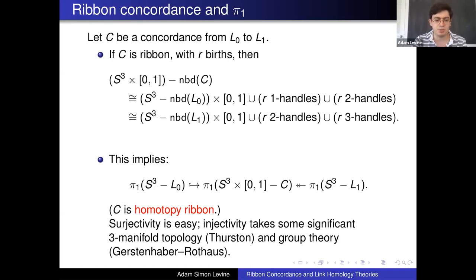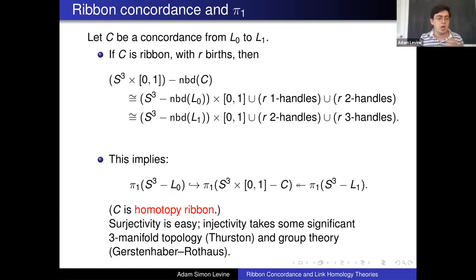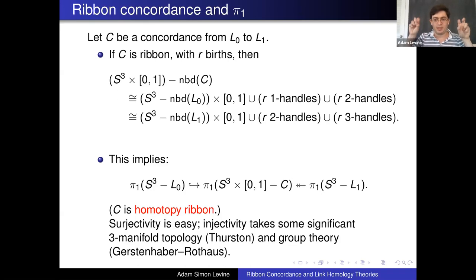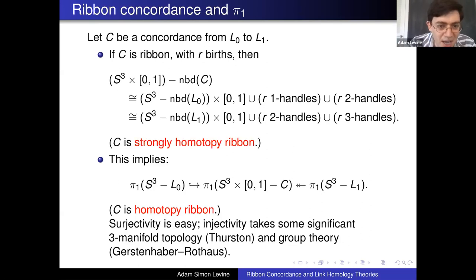What you get from this is that the fundamental group of the complement of L0 injects into the fundamental group of the surface complement, and the fundamental group of S³ minus L1 surjects onto the fundamental group of the surface complement. The surjectivity is somewhat easy; the injectivity is harder, using serious three-manifold topology due to Thurston and significant group theory going back to Gersten, Potter, and Rothaus. The latter condition — injectivity and surjectivity — is commonly referred to in the literature as being homotopy ribbon. The former condition about only one-handles and two-handles is called strongly homotopy ribbon.